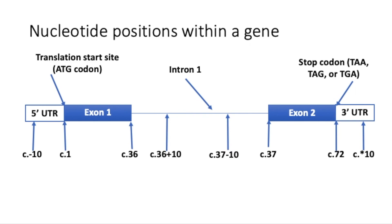Variants within the intron are described relative to their distance from the closest exon. For example, C dot 36 plus 10 describes a variant in intron 1, 10 nucleotides downstream of the end of exon 1, which is named C dot 36. C dot 37 minus 10 describes a variant in intron 1, 10 nucleotides upstream of the beginning of exon 2, which is named C dot 37.